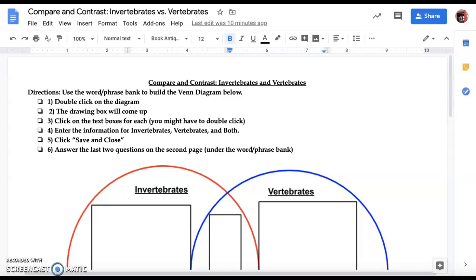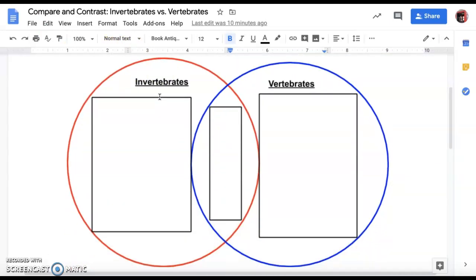We're just going to be noticing some shared characteristics or differences among them. So down here we have our Venn diagram that I've drawn.